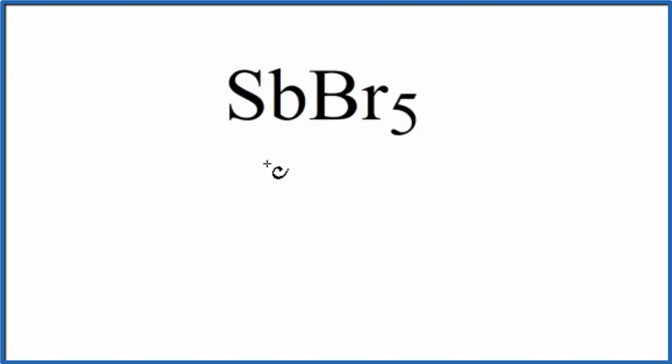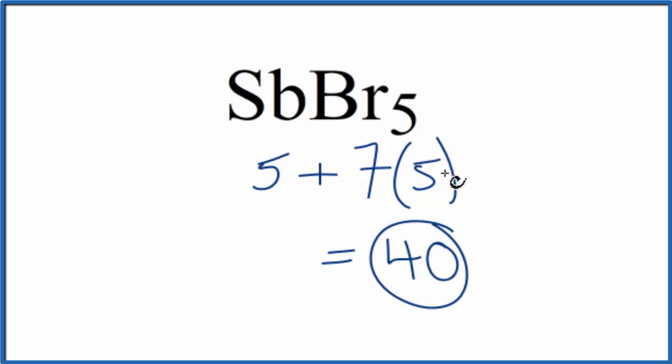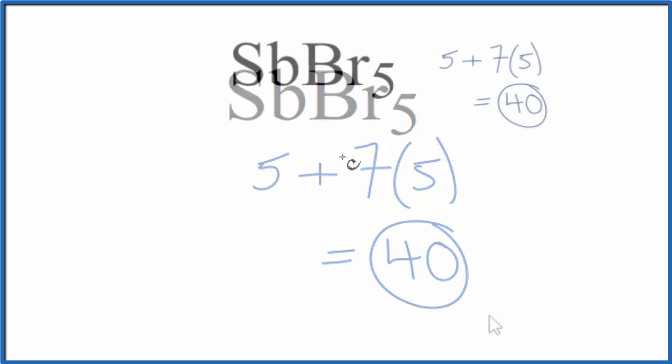SB, that's in group 15, sometimes called 5A, that has 5 valence electrons. Bromine, group 17, sometimes called 7A, it has 7, 5 bromines. So 5 plus 35 gives us a total of 40 valence electrons for the SBBr5 Lewis structure.